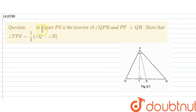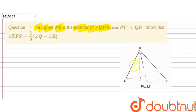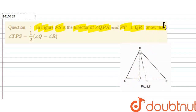Hello friends, in this question — in the figure, PS is the bisector of angle QPR, and PT is perpendicular to QR.